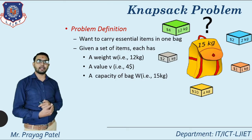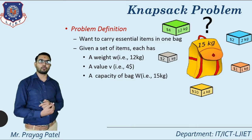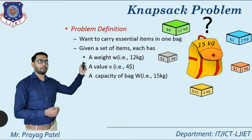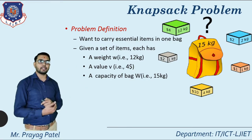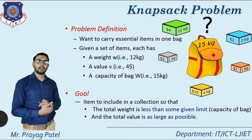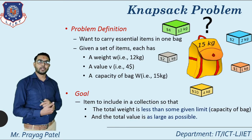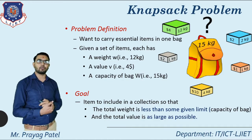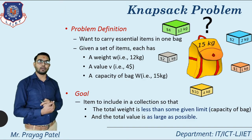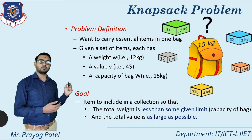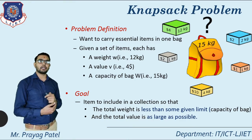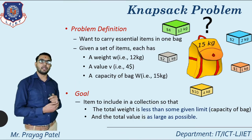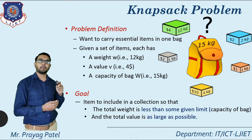Each and every object has a weight and value. Here consider the value equal to 4 dollars, 2 dollars, 1 dollar, and so on. The capacity of bag capital W is given — here W equal to 15. Our goal is to include items in a collection so that the total weight is less than the given limit of 15 kg, and the total value is as large as possible — meaning we want to find the maximum profit.